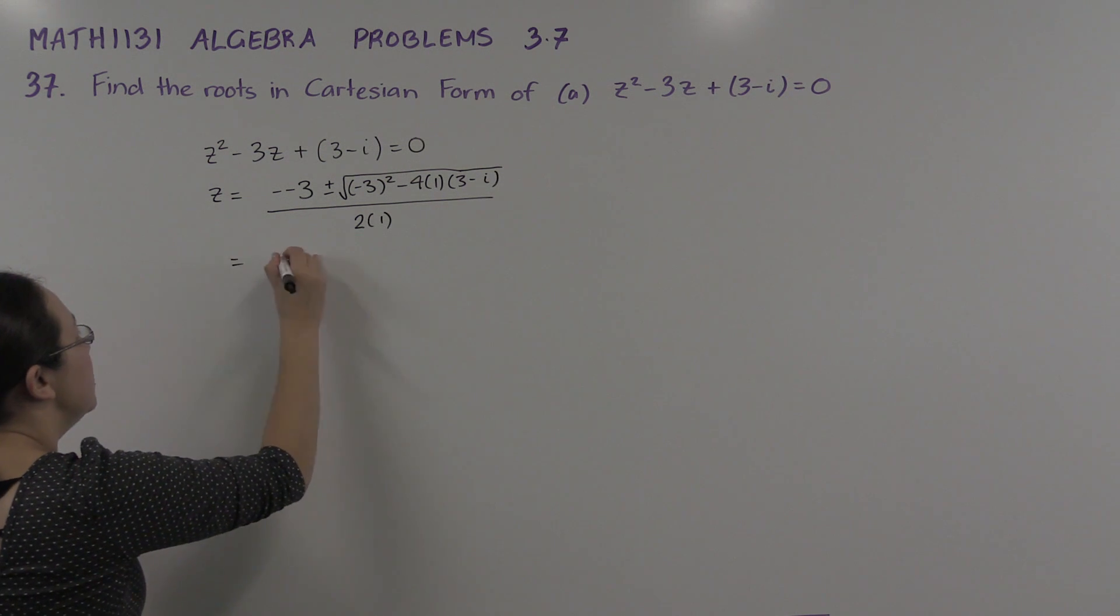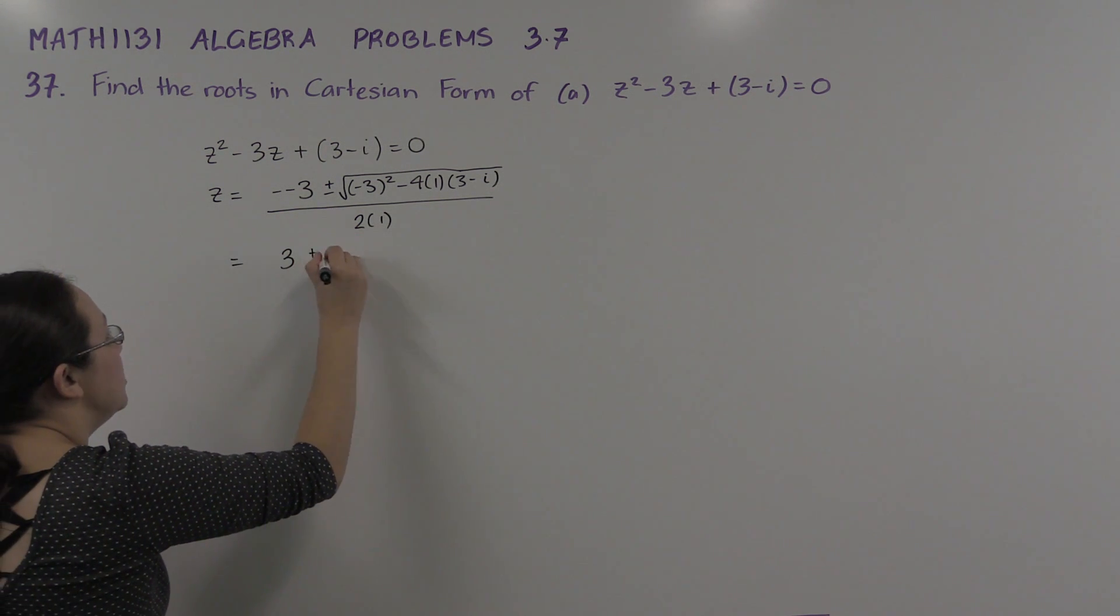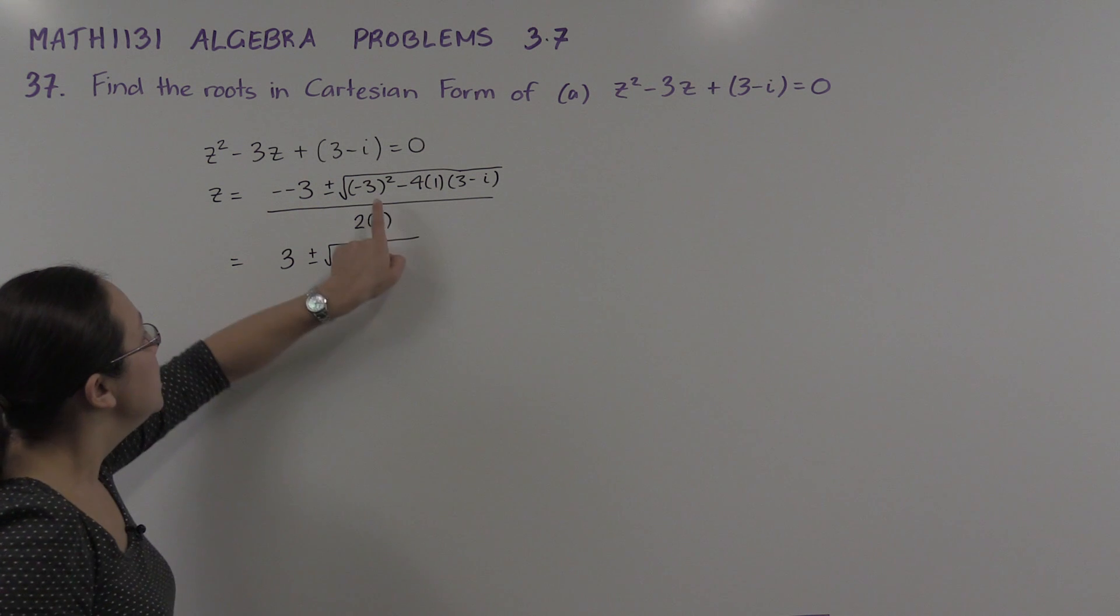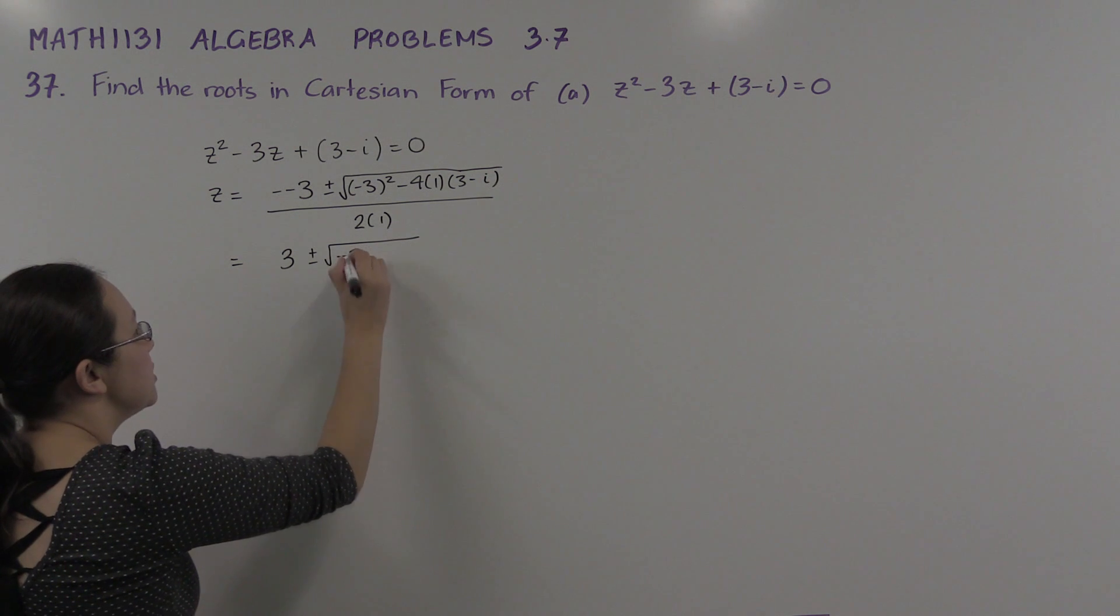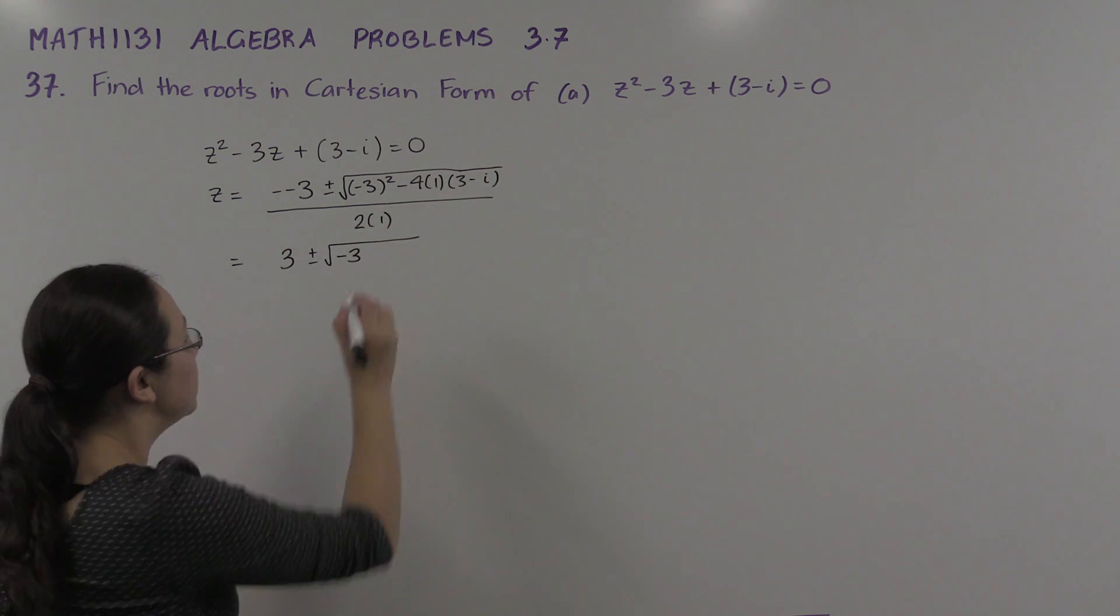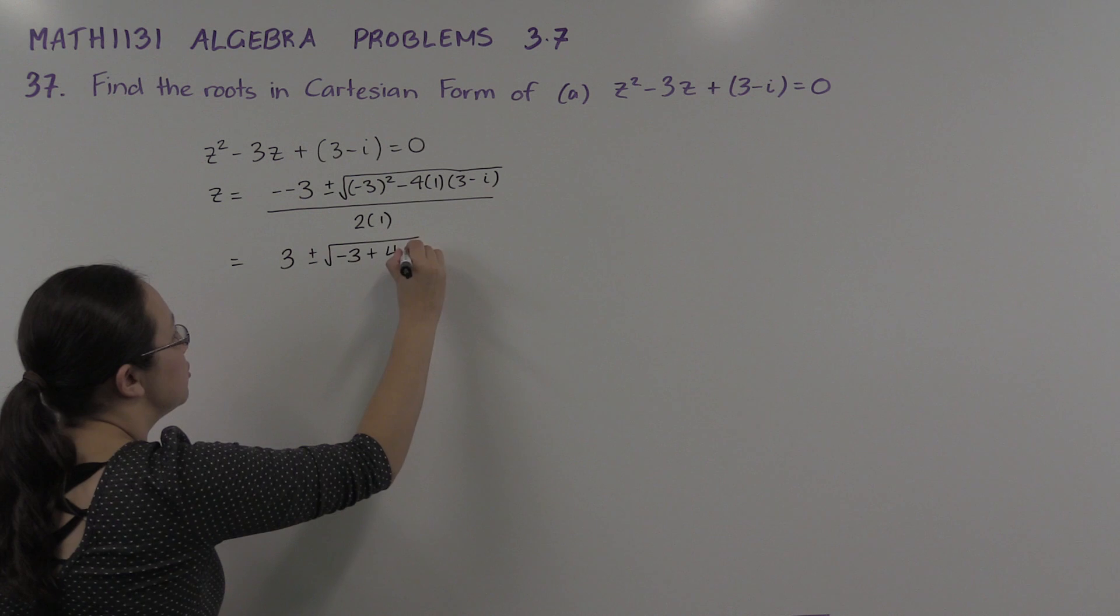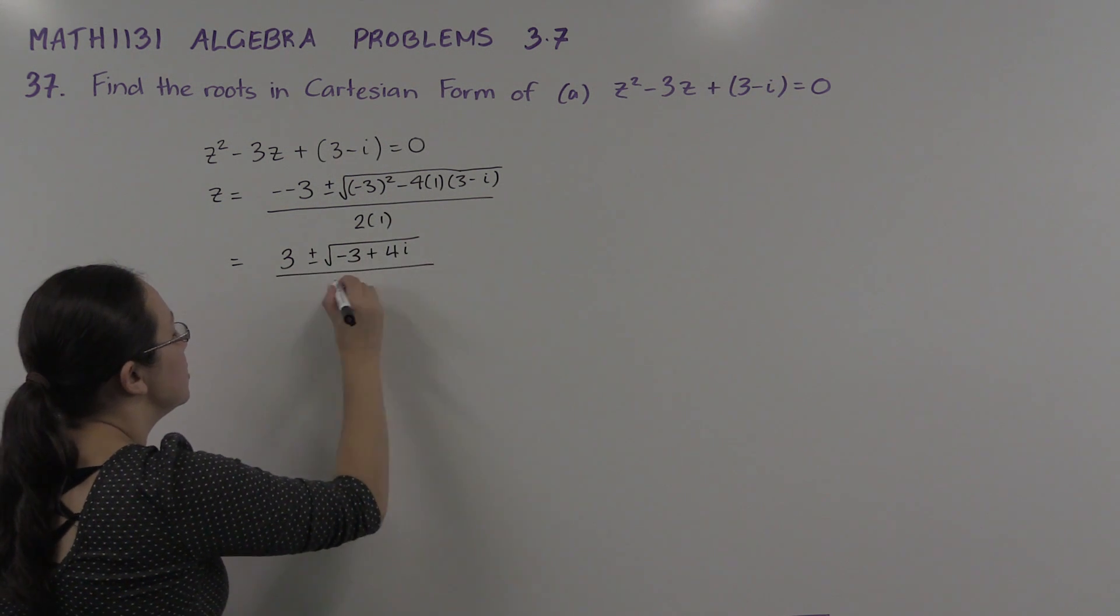Just cleaning that up a bit, we'll get 3 ± √(9 - 12 + 4i). That gives us -3 as the real part, plus 4i as the imaginary part, all over 2.